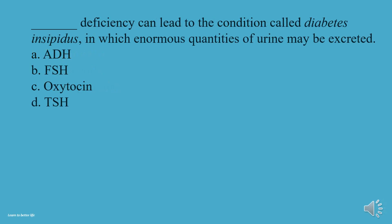What deficiency can lead to the condition called diabetes insipidus, in which enormous quantities of urine may be excreted? A, ADH. B, FSH. C, Oxytocin. D, TSH. The answer is A, ADH.